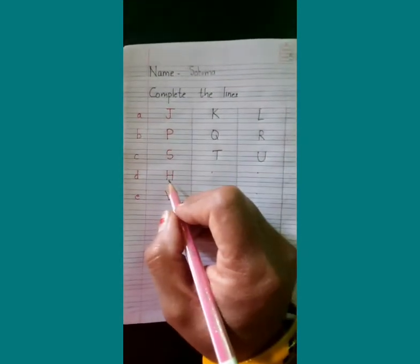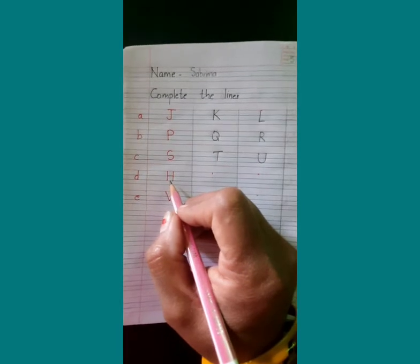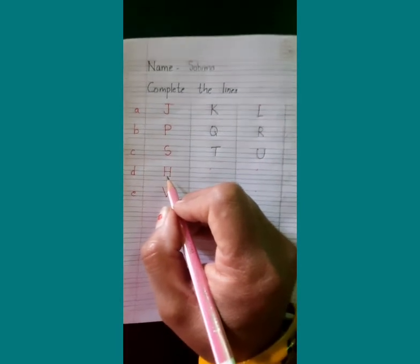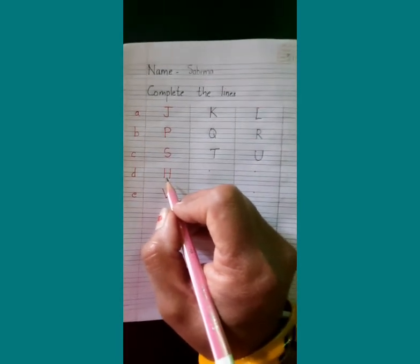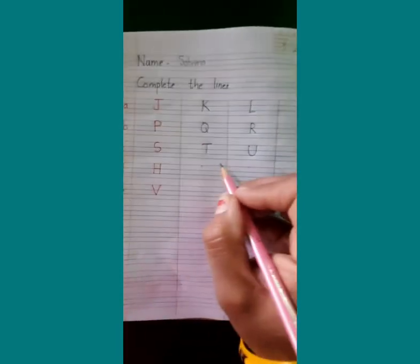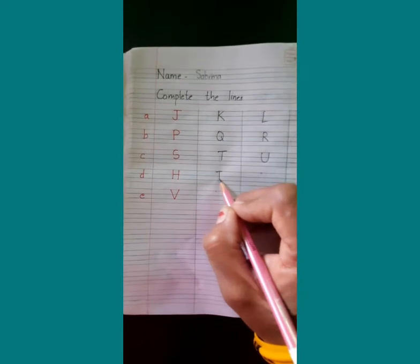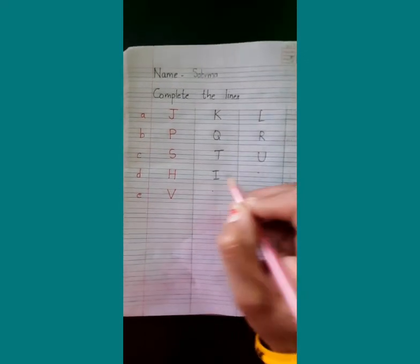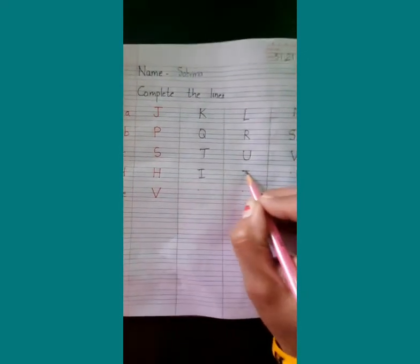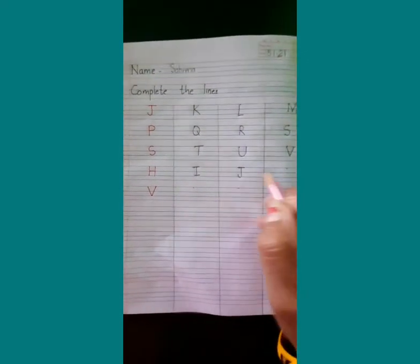Now children, we will say what letter is this? H. After H children, I. After I children, J. After J children, K.